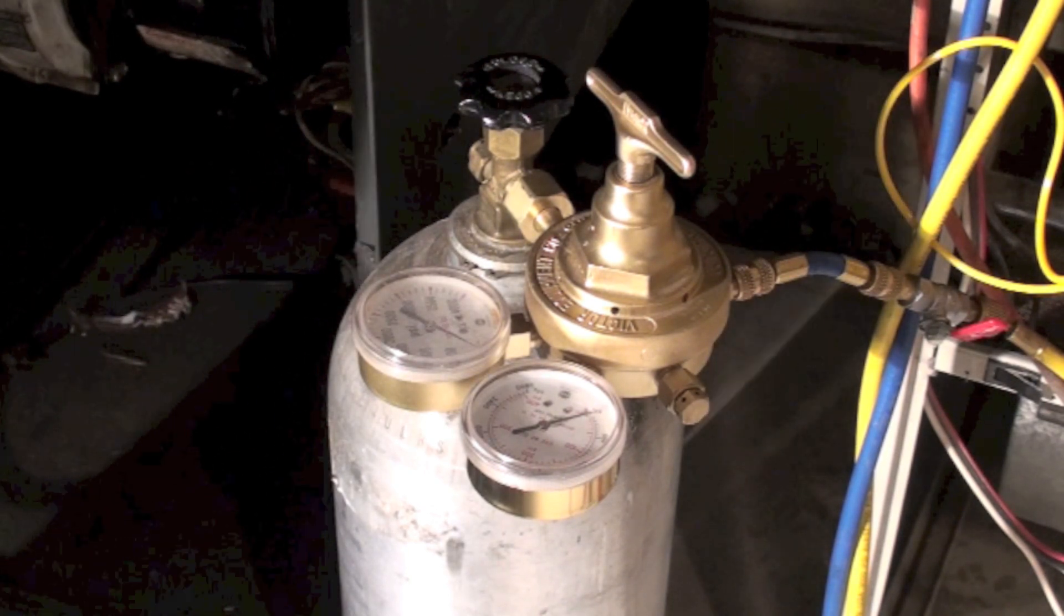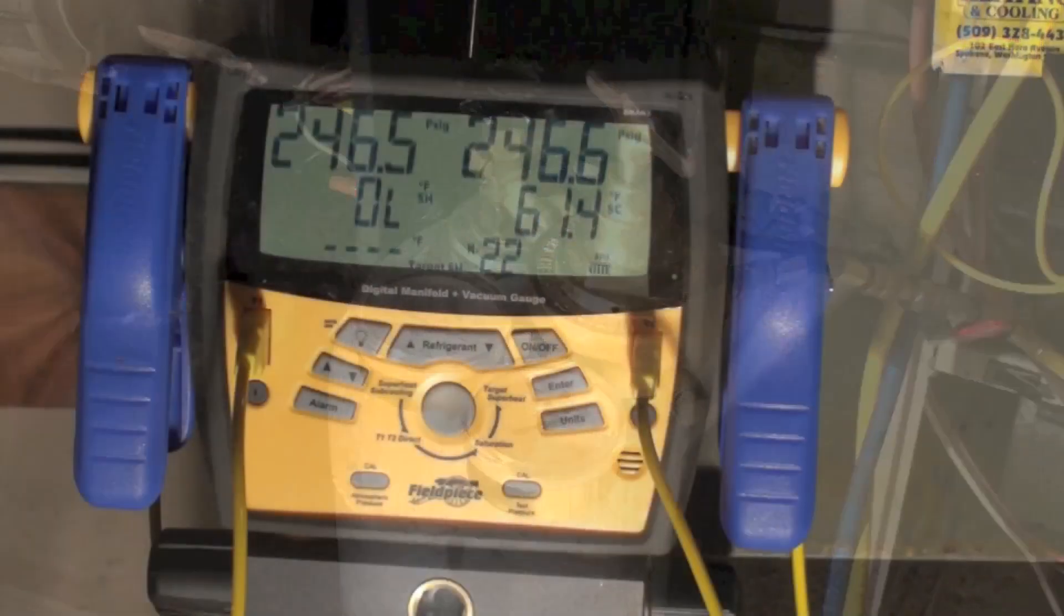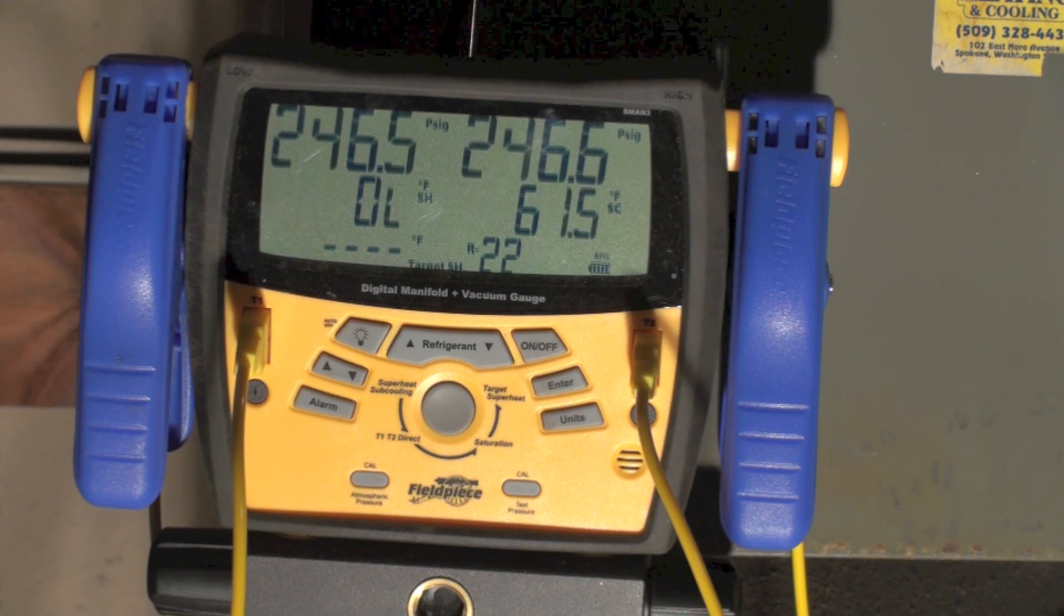If you want to use electronic leak detectors with your pressure test, you can do that, but you've got to mix a little refrigerant with the inert gas, and you can use your electronic detector. As before, we're going to set the pressure, record it, and then we're going to start looking for leaks in obvious places and see if we get a pressure drop. Probably about 15 minutes, we'll do it.